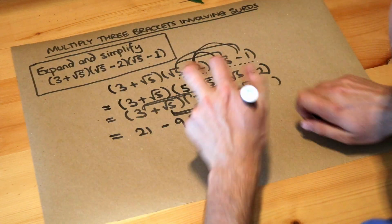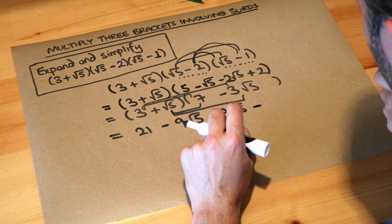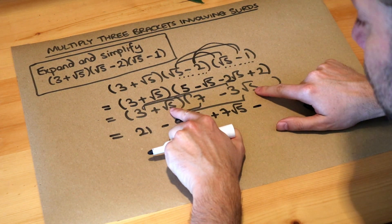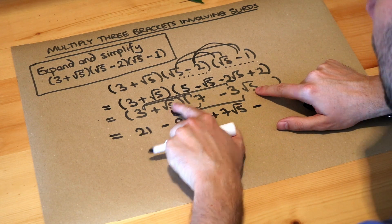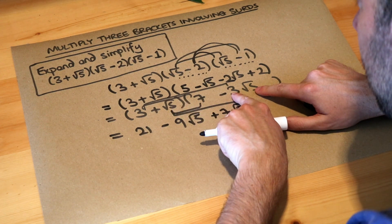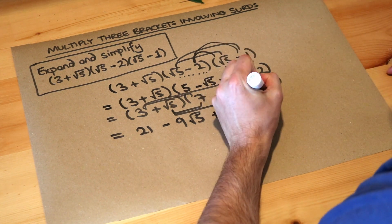Positive times negative is negative. √5 times √5 is 5, then multiplied by 3 gives 15. So we get -15.